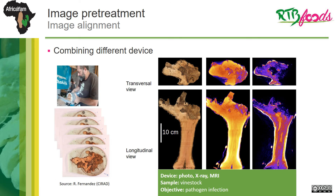It is becoming more and more possible to combine images from several sensors. In order to allow a multimodal analysis, again it is necessary to align the different images. In this example, a digital camera, X-ray, and MRI images are combined to better identify disease progression in vine stock.